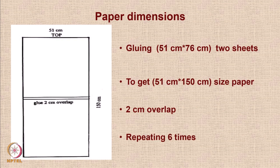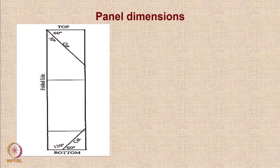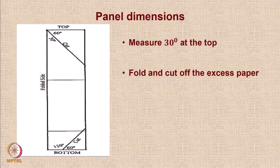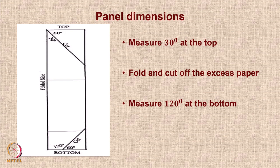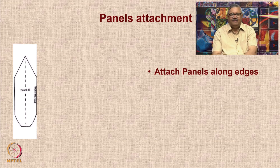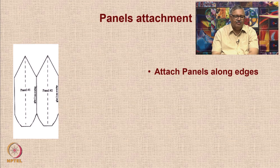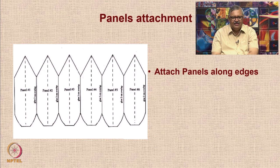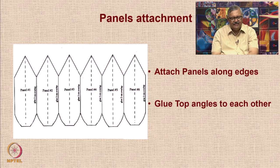With a 2 cm overlap, if you repeat this 6 times you get 6 sheets. On these sheets you draw templates for cutting — 30 degrees at the top and 60 degrees at the bottom. Excess paper is cut off after folding along those lines, and the bottom material should measure at least 120 degrees at the bottom. You then attach the 6 panels along the edges, each with a 2 cm glue overlap, joining panel 1 to 2, then 3, 4, 5, 6. When you glue the top angles together it becomes a frustum of a cone.